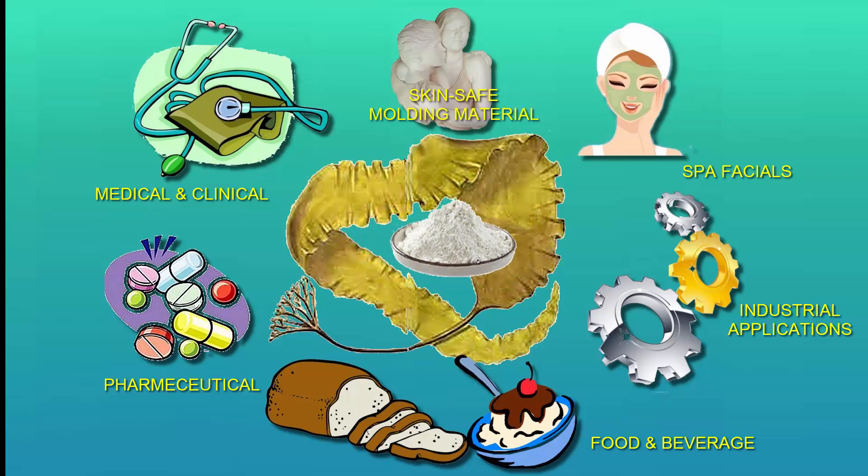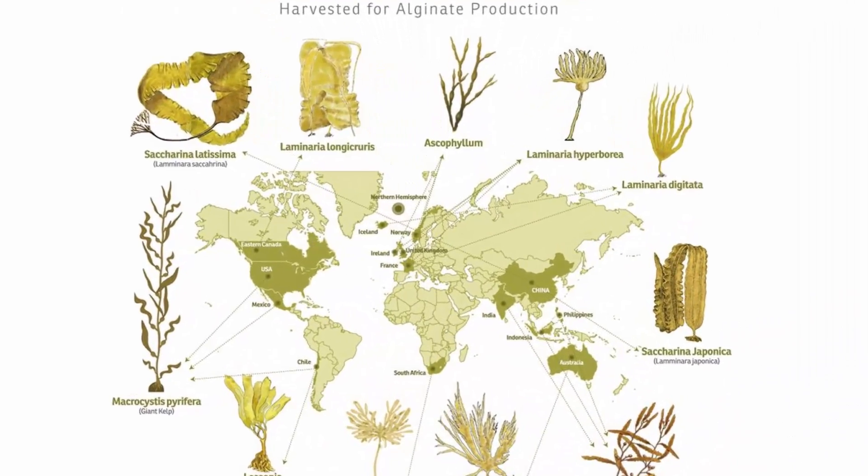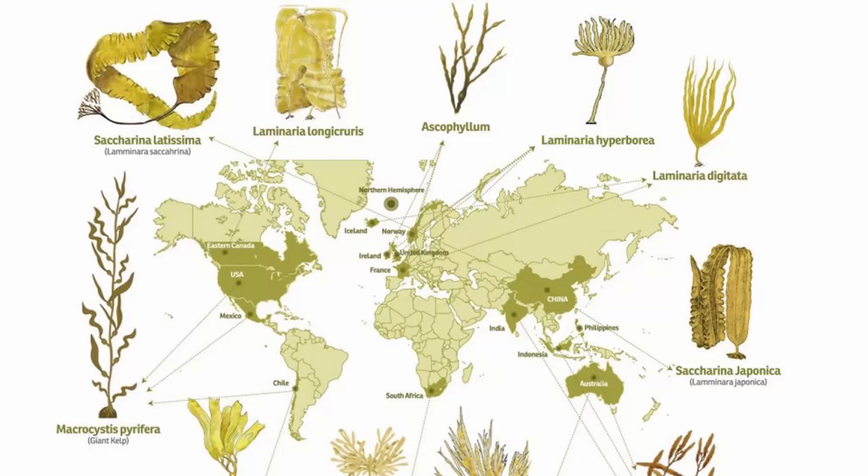Refined Alginate is derived from the cells of brown seaweed which is available throughout the world, but primarily from Northern Europe, Chile, China and our West Coast.